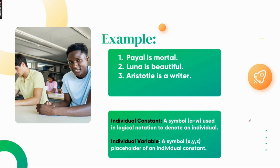There are certain examples given here. The first example: 'Pile is mortal.' Also 'Luna is beautiful,' and 'Aristotle is a writer.' Let's take these three examples and try to symbolize them. In 'Pile is mortal,' this is a singular proposition — we are talking about an individual. Pile is the individual and 'mortal' is the attribute. 'Being mortal,' 'being beautiful,' 'being smart' — these are the attributes.